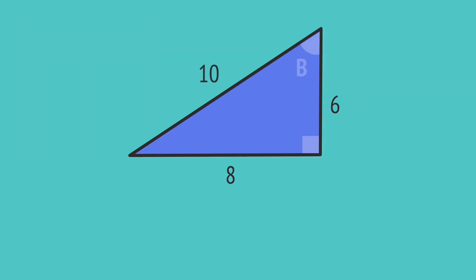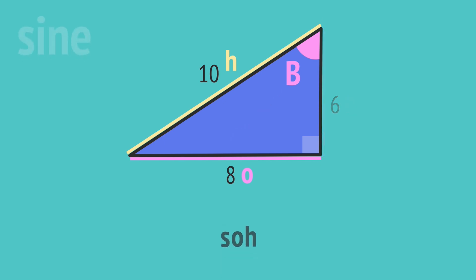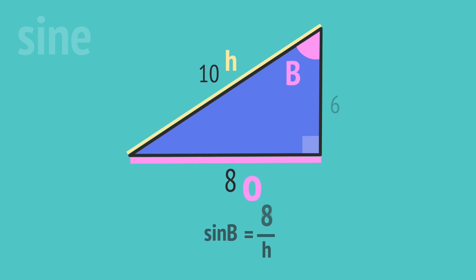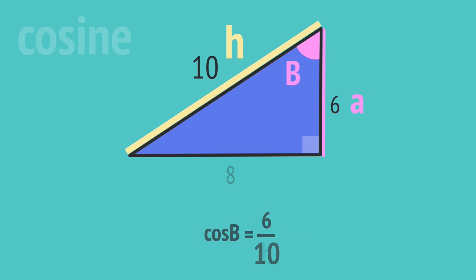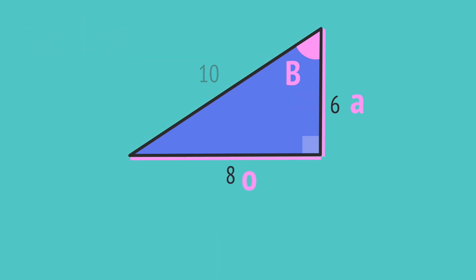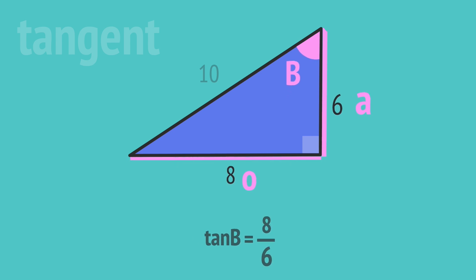Now, if we're writing trig ratios for the other angle, angle B, then the opposite side and the adjacent side are reversed. The sine is the opposite over the hypotenuse, so we write sine B equals 8 over 10. The cosine is the adjacent over the hypotenuse, so we write cosine B equals 6 over 10. And the tangent is the opposite over the adjacent, so we write tangent B equals 8 over 6.